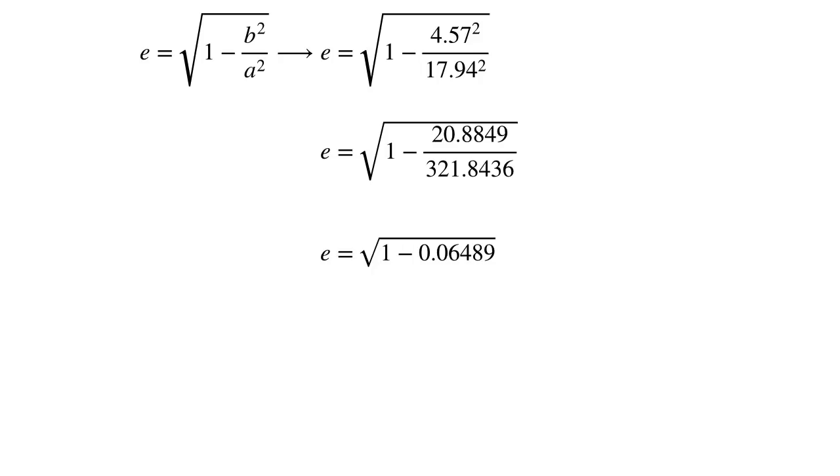So 20.8849 divided by 321.8436 is 0.06489. You can verify that, go ahead and work on your calculator. Go back over this and double check your numbers because you're probably going to see something like this on the exam. And you're going to have homework 3 doing some eccentricity calculations as well. There's your intermediate step: 1 minus 0.06489. Now you've got to do 1 minus that, but it's still inside the square root. So you have 0.9351 quantity square rooted. Now just hit the square root key and you get 0.967. So there's the eccentricity of a comet whose semi-major axis is 17.94 and whose semi-minor axis is 4.57 astronomical units.